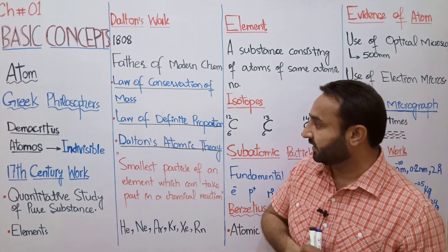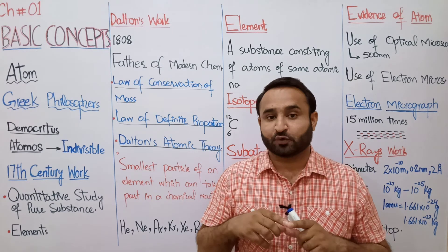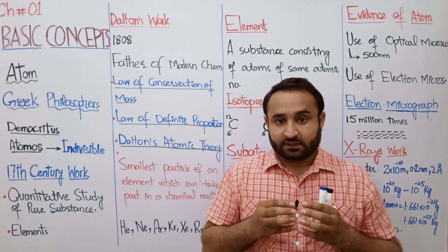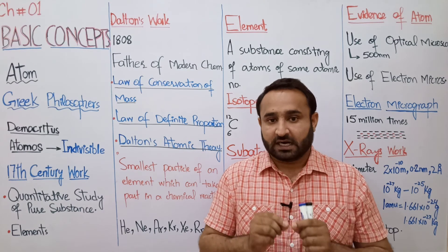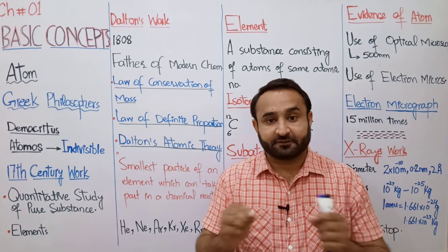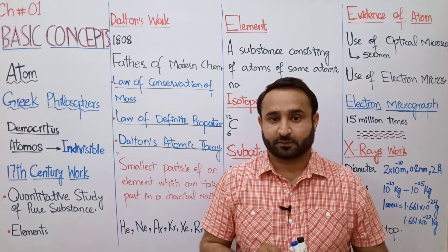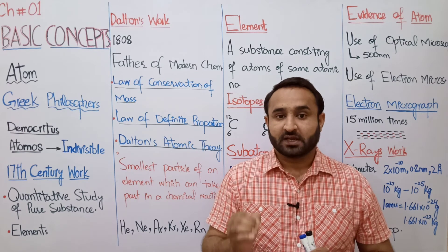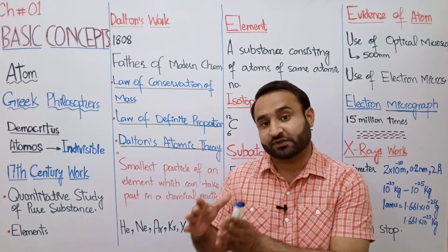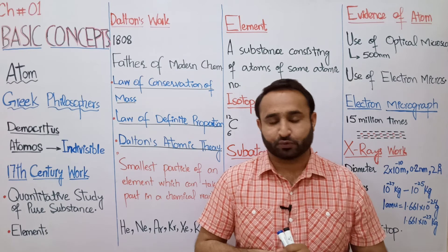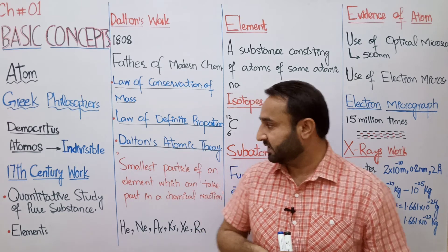Second law، law of definite proportion، کے مطابق: a given compound always has a definite proportion — a specific ratio between atoms of different elements — no matter from which source the compound is obtained or by what method it is prepared. مثال کے طور پر water میں ہمیشہ two hydrogen atoms اور one oxygen atom ہوتے ہیں، یعنی 2:1 ratio۔ یہ ratio ہمیشہ same رہے گا چاہے water کہیں سے بھی آئے اور کسی بھی طریقے سے بنائی جائے۔